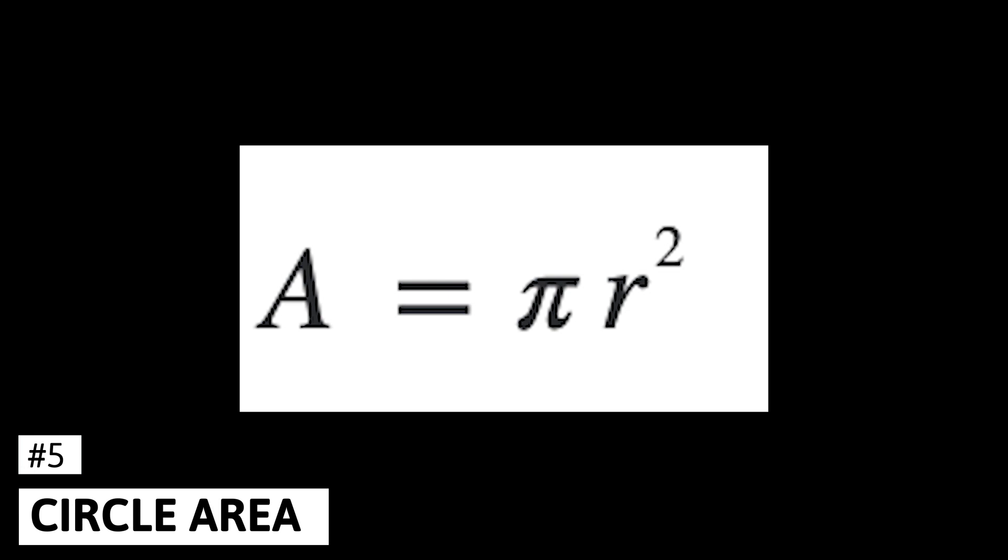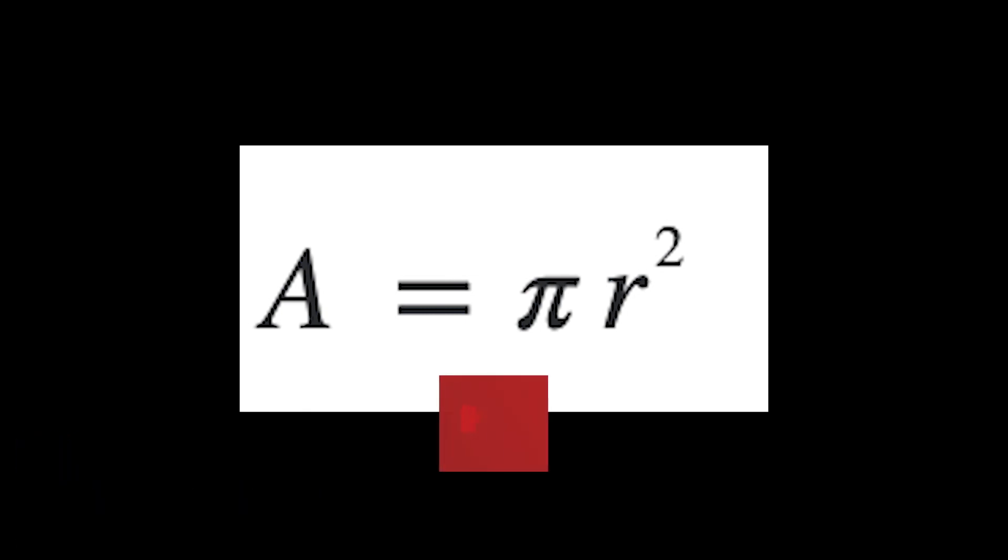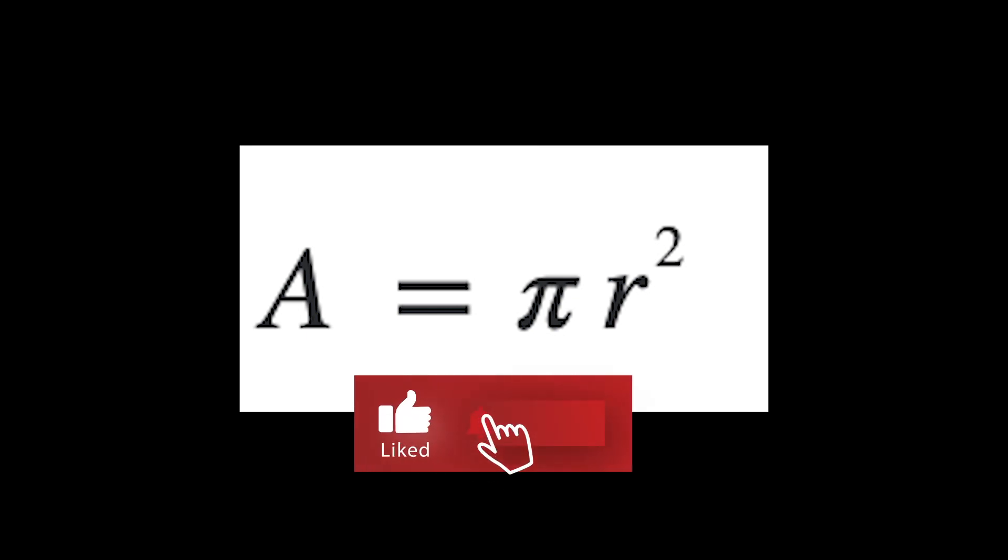Number 5, area of a circle. And lastly, the area of a circle formula. This is a very simple formula. The area of a circle equals the radius, which is the distance from the center of a circle to the circumference, squared, multiplied by pi.